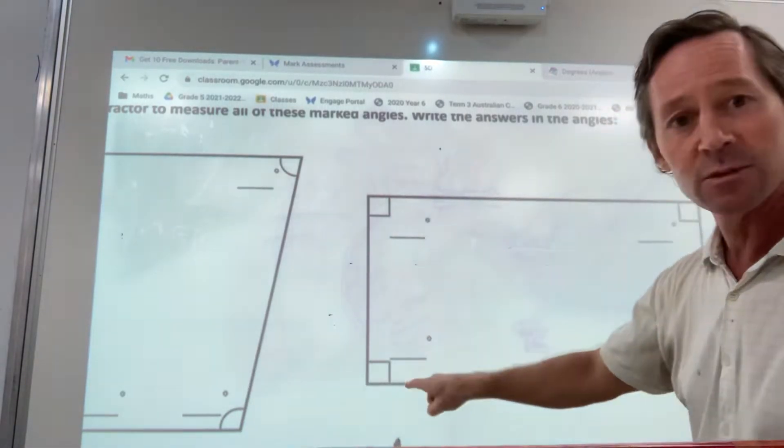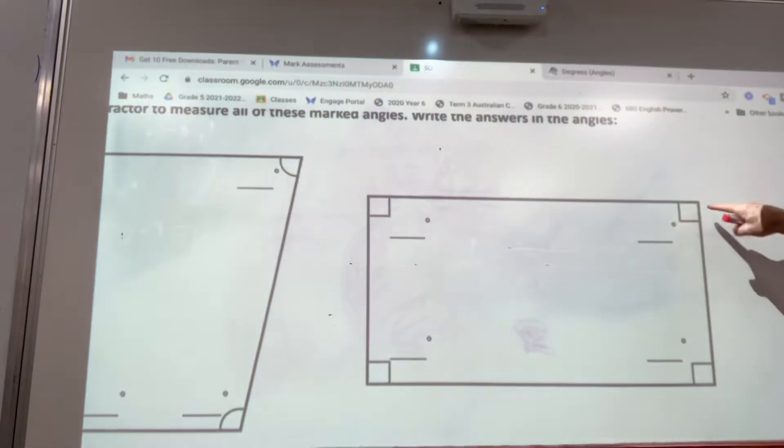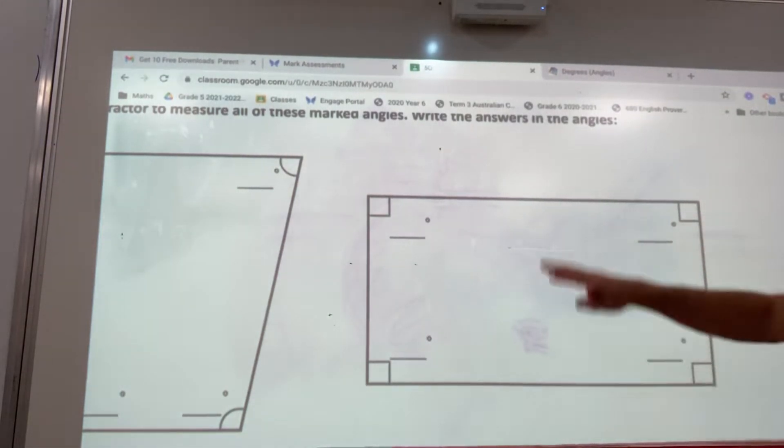So that's 90, this one down here is 90, this one over here is 90, and that's 90. So it's 360 degrees.